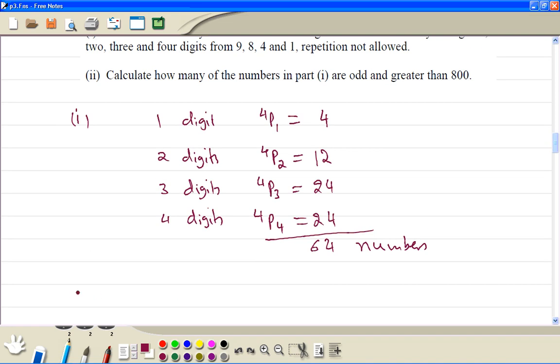Part B, or part 2. Because the number has to be odd and greater than 800, so we can only start with 8 or 9, then we have to finish with 1 and 9. So first, because greater than 800, we must have at least 3 digits as well.